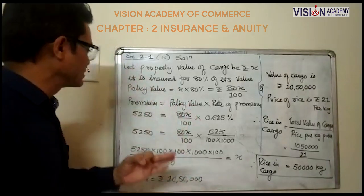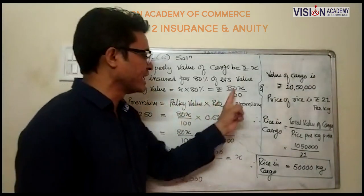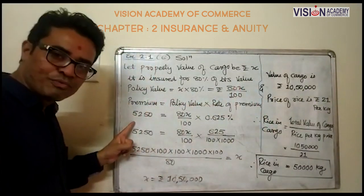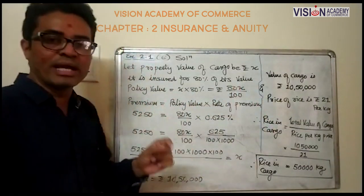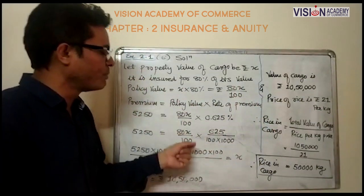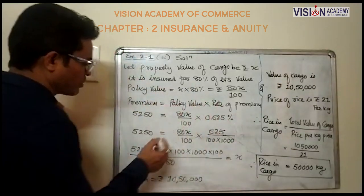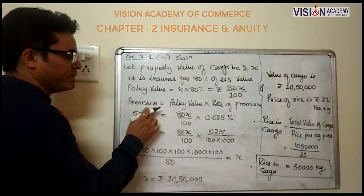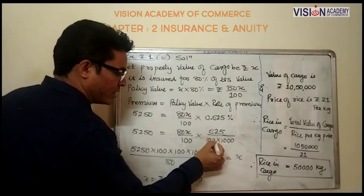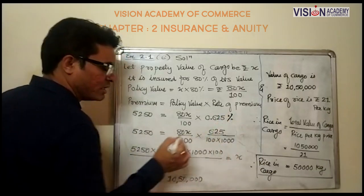Calculation of premium: Premium equals policy value into rate of premium. Premium is 5,250, policy value is 80x upon 100, and the rate of premium is 0.625 percent. For this decimal part we keep 1000 and for the percentage we keep 100.